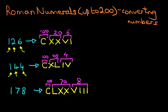So that is how we convert numbers up to 200, between 100 and 200, into Roman numerals. Now let's suppose it is reversed. We've now got the Roman numeral and we want to work out what it represents. So let's look at our first example.